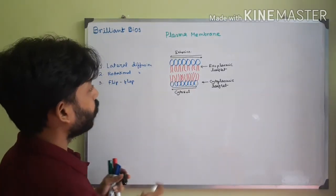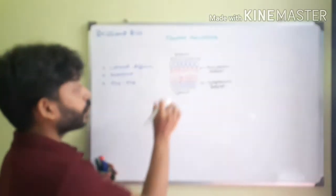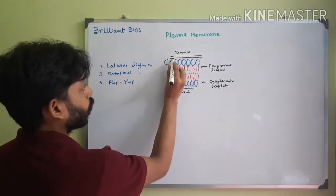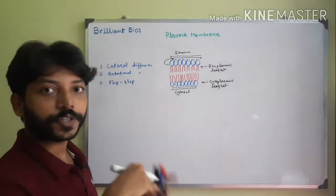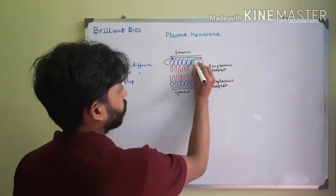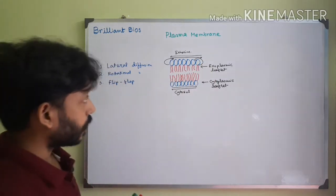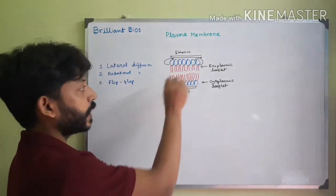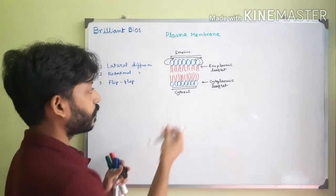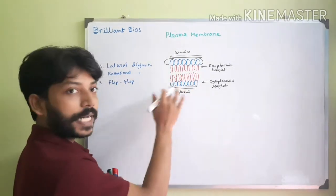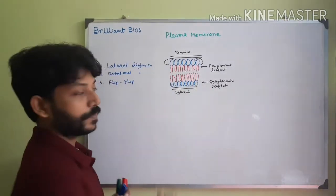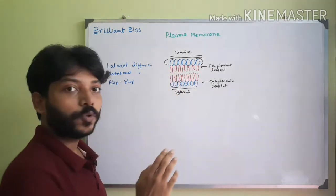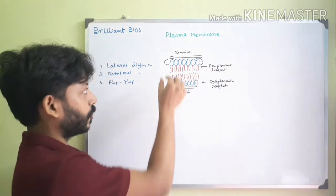Another movement performed by lipid molecules is called rotational movement, in which each and every lipid molecule stays in its own position but rotates 360 degrees. In the case of lateral movement, a molecule can change its position — it could move from here to there. But in the case of rotational movement, the lipid molecule remains in the same position but rotates.